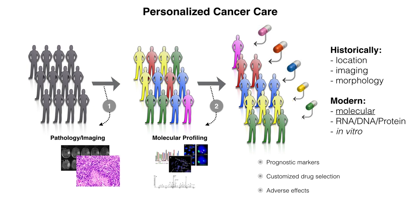In the case of glioblastoma, transcriptomics and genomics haven't really been able to produce profiles predictive of therapeutic responses. So one additional layer we're adding now is proteomic information — we can find out if that provides useful information. Also, some molecular profiling efforts may help identify which patients respond adversely to specific therapies.